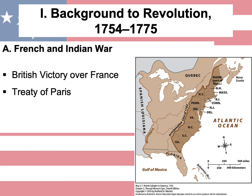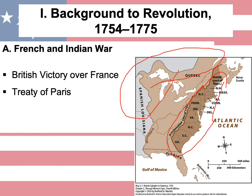The French and Indian War ended with the Treaty of Paris, in which Great Britain gained Canada and all French lands east of the Mississippi River, except for New Orleans. Let me get my pointer out. So here, Great Britain claims they received that land, as well as Canada.